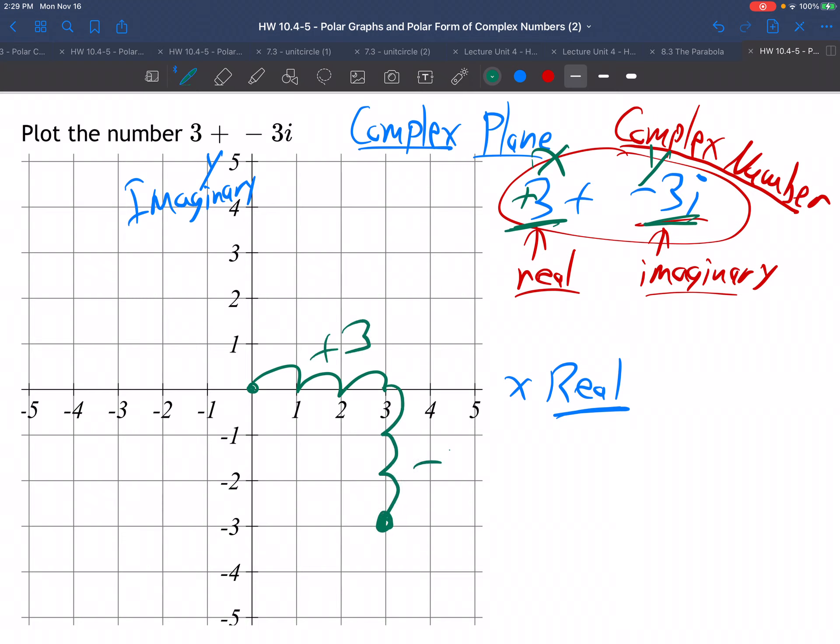Plus 3 and minus 3i. See, the imaginary numbers go up and down, because the imaginary axis is the y-axis. And the real numbers go right and left, because the x-axis is the real axis. So when all is said and done, here is the point.